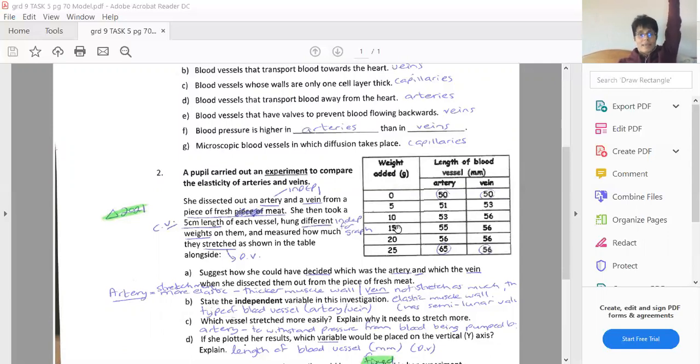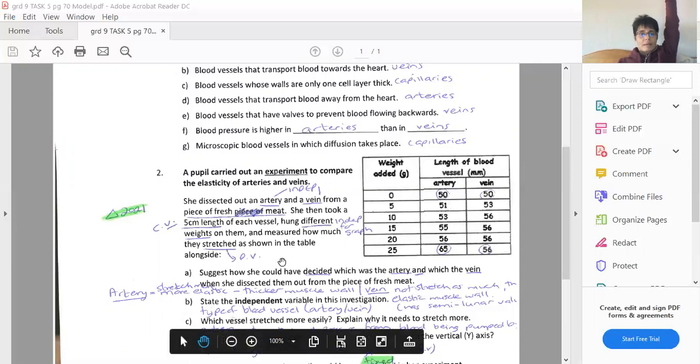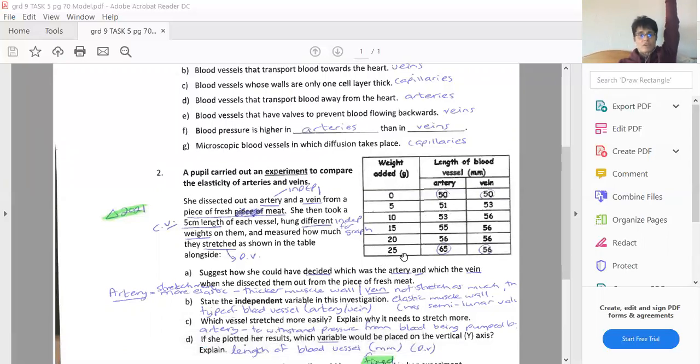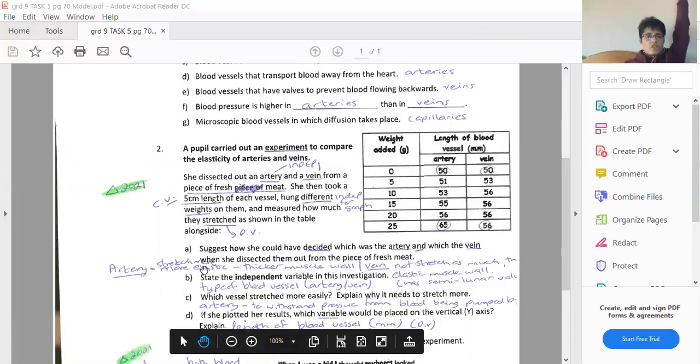Now I've already written here, the fact that she's got an artery or vein is the independent variable of the whole investigation. The fact that she took the five centimeters of each vessel from the piece of meat is a fixed variable. And she hung different weights on them because she wants to see how much they stretch. So suggest how she could have decided which was the artery and the vein. Well, if you stretch those little blood vessels, you know, like stretching an elastic band, then the artery has got more elastic, so it should stretch more. The vein doesn't stretch as much.